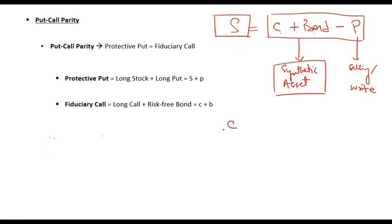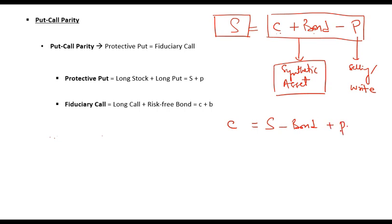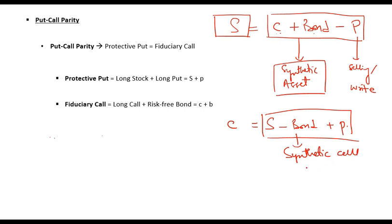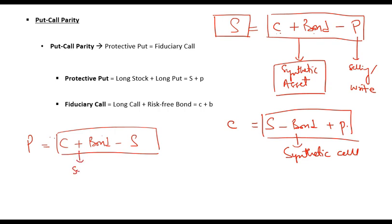Similarly, if I keep call option on the left-hand side, it will equal asset minus bond plus put option. This is known as synthetic call. I can also make put option the subject — in that case, it will equal call option plus bond minus asset. This is known as synthetic put.